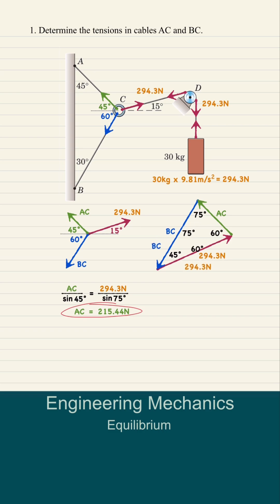Similarly, BC over sine 60 is equal to 294.3 over sine 75. BC is equal to 263.86N.